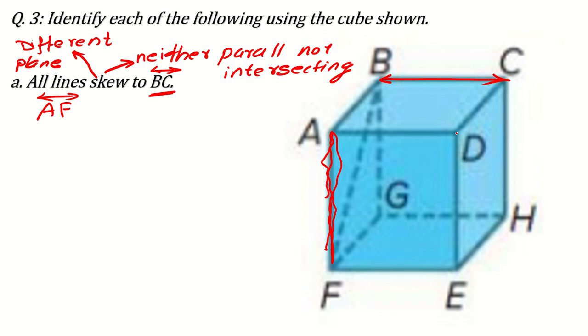Another part of the answer can be DE. DE also a line which is not parallel to line BC and it is in the different plane, so it will not intersect also. Another line can be HE. It can be the part of the answer because they will not cut each other. Another part of the answer can be FG because they are neither parallel nor intersecting. Why they will not cut each other? Because they are in the different plane.